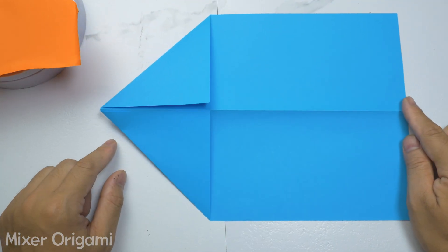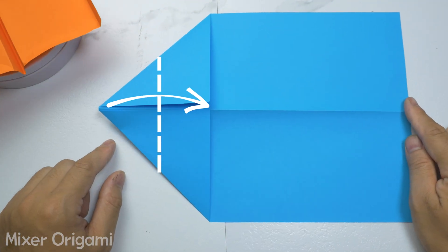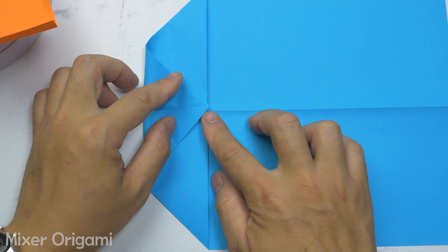Step 3. Fold the top of the triangle so that it coincides with the midpoint of the base. Remember to flatten the paper.